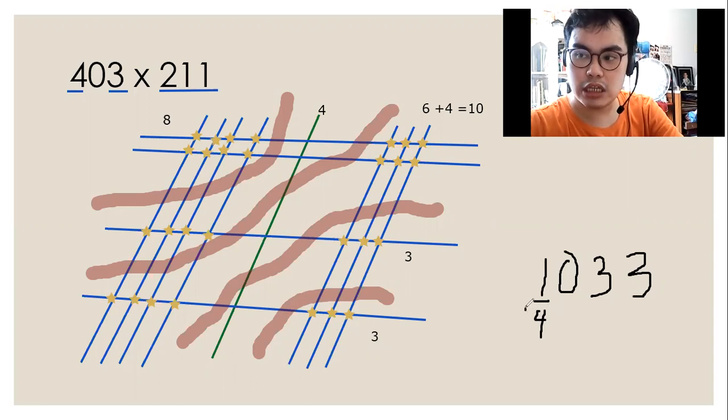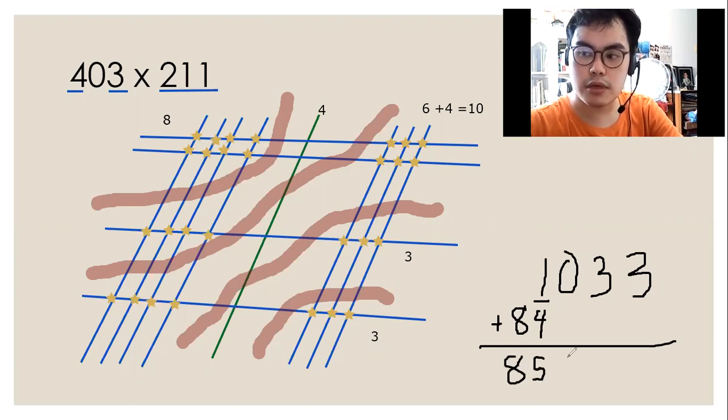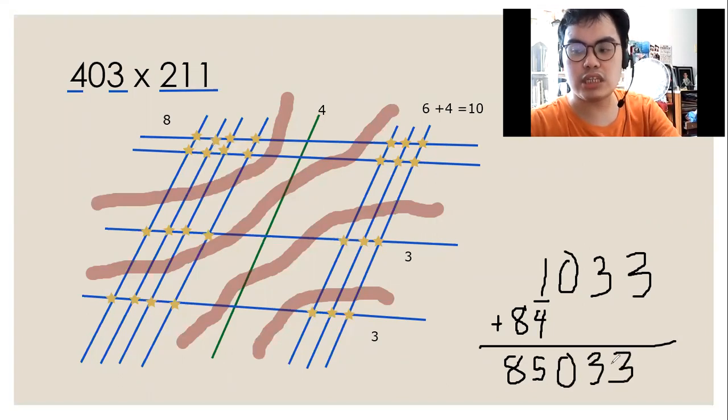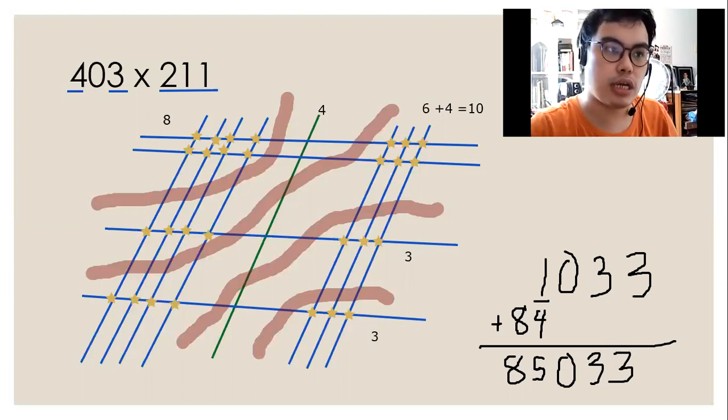Then the eight will go here. So we're going to add all together. This becomes 85,033. So 85,033 is our answer.